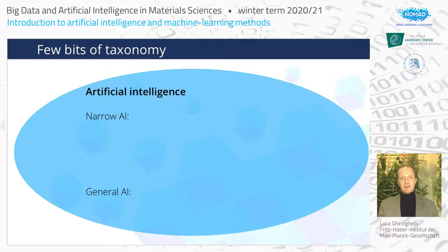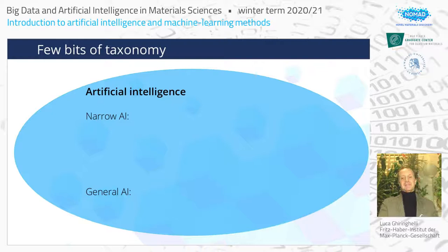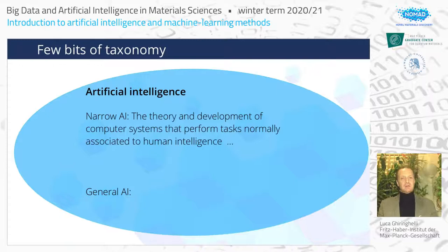It's important to notice that we have a narrow artificial intelligence as opposed to general artificial intelligence. This course is essentially, or totally, devoted to the so-called narrow artificial intelligence, which is by no means narrow in scope — it's narrow in one specific sense, which I will show.